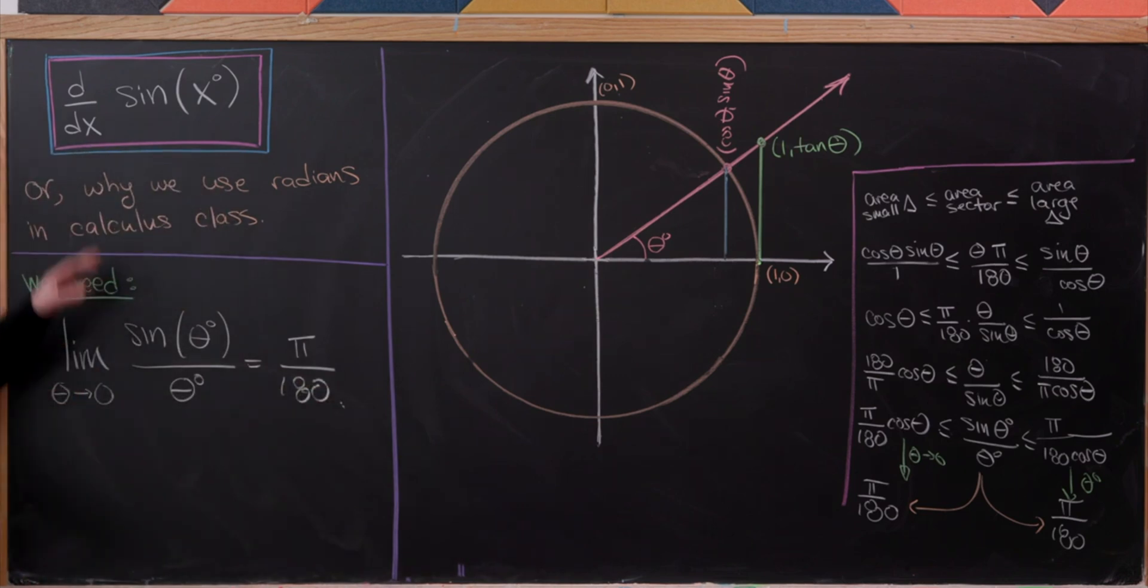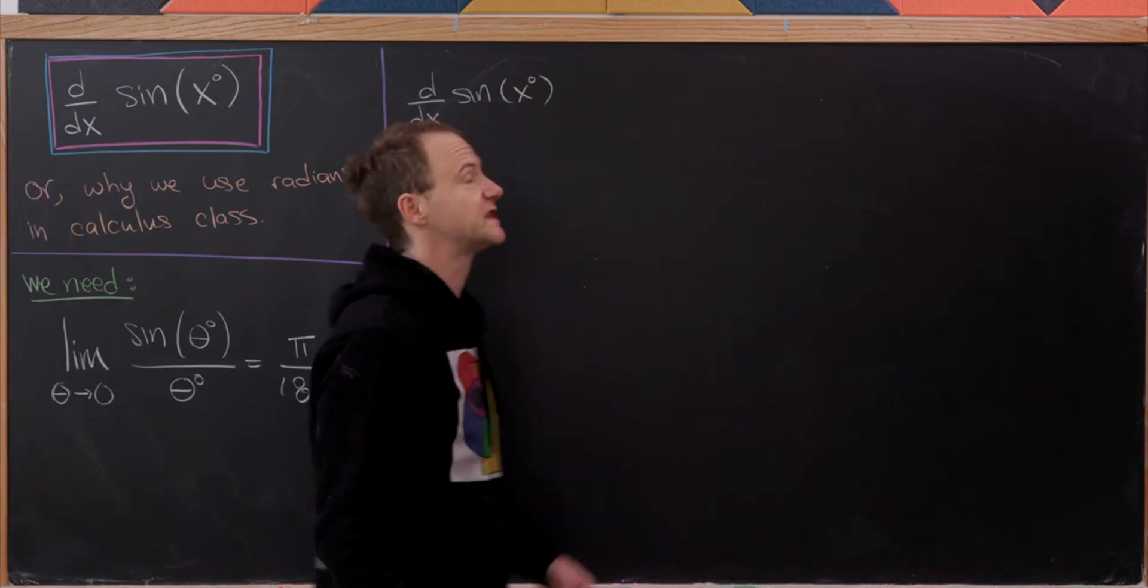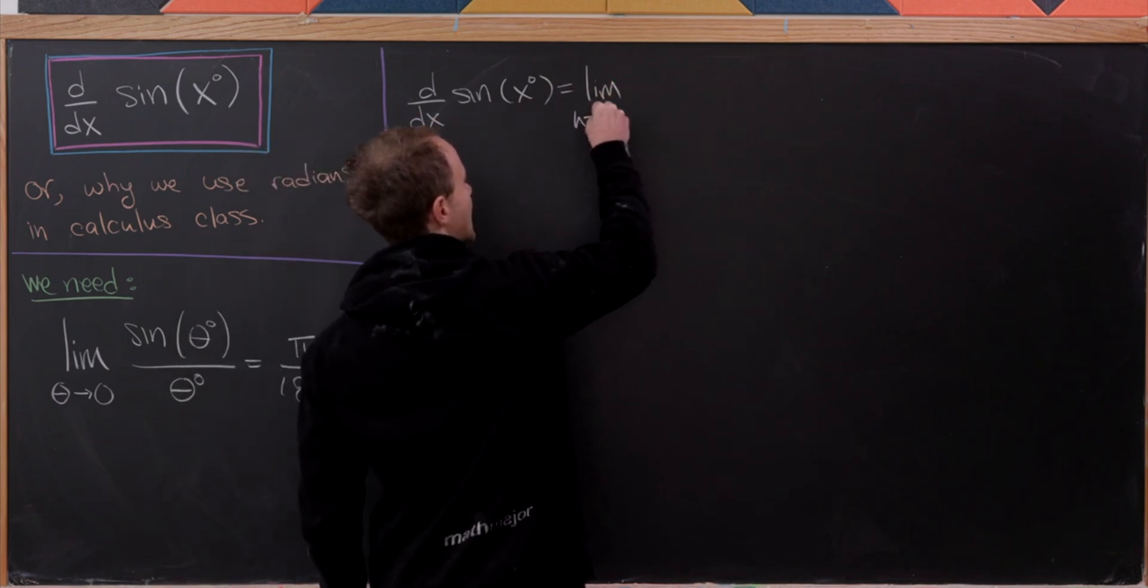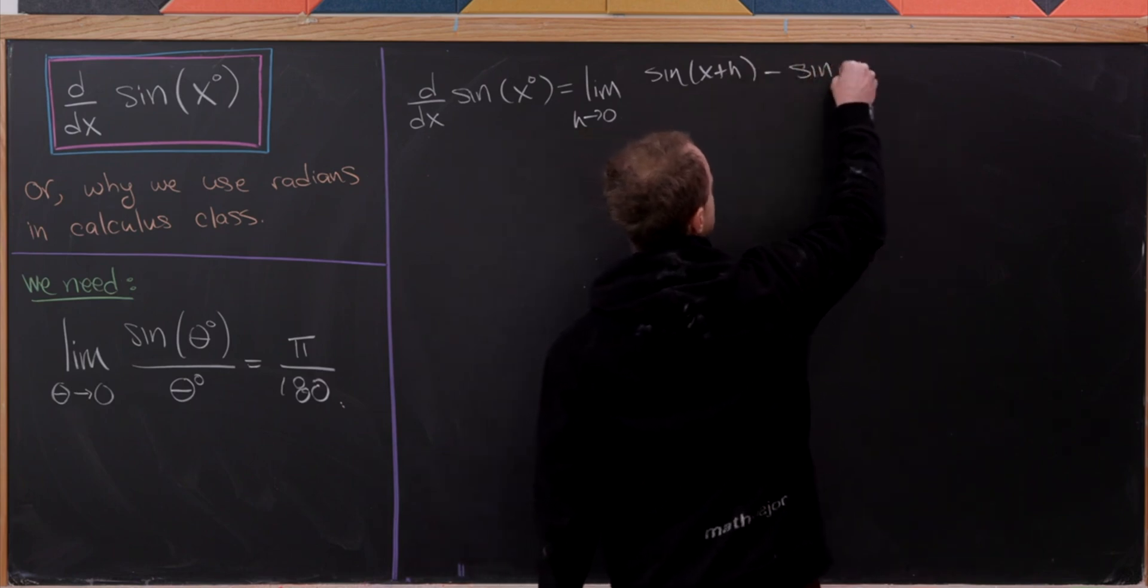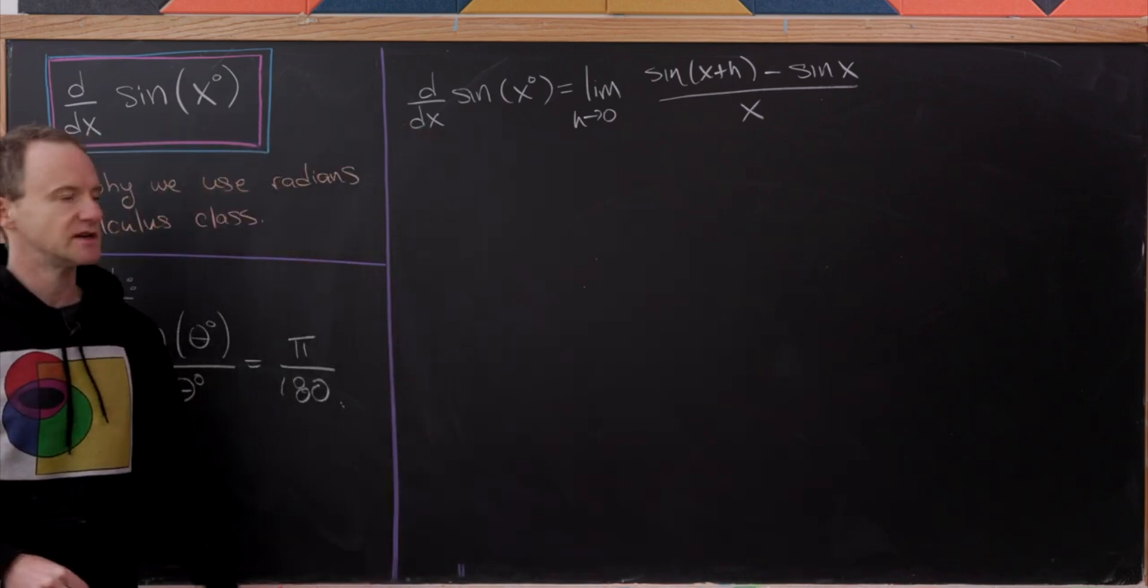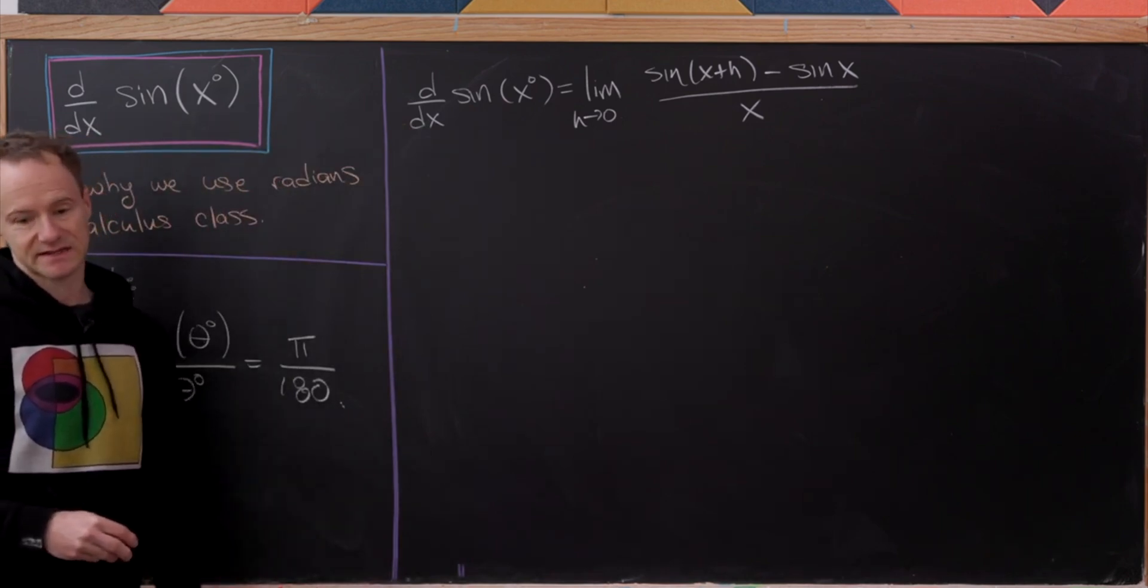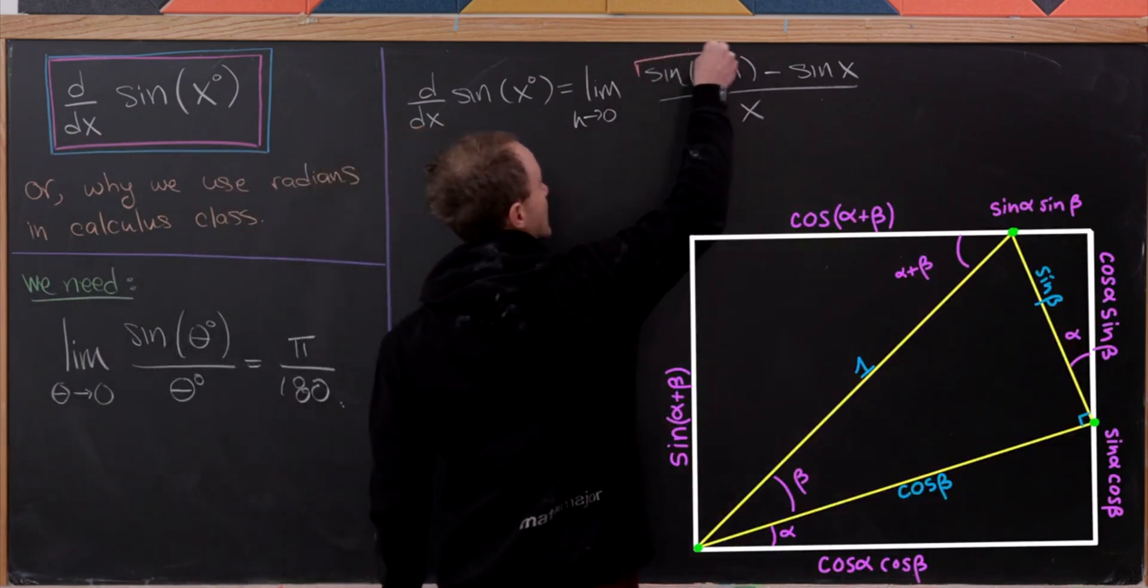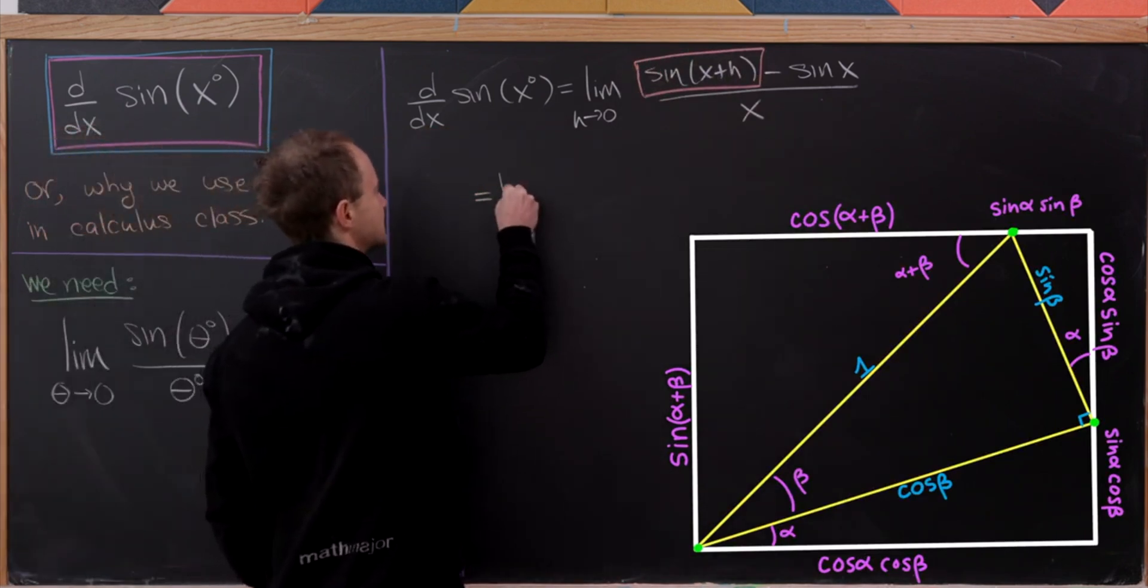Okay, so now let's use this to find our derivative of sine of x degrees. So in order to find this derivative we'll use the limit definition. So the derivative of sine of x degrees will be the limit as h goes to 0 of sine of (x + h) minus sine of x all over h. Where of course I have degrees inside of those sine functions on the right hand side, but I'm omitting that just for neatness. So next up what I'll do is I'll use the sum angle formula for this sine of (x + h) degrees.